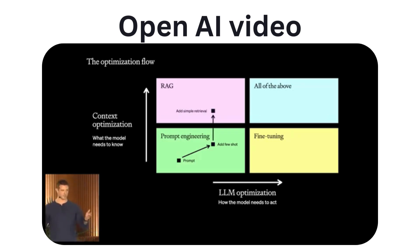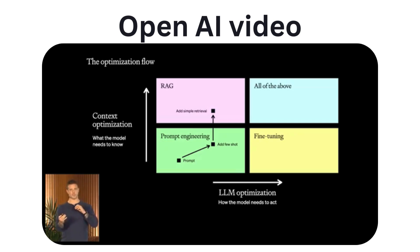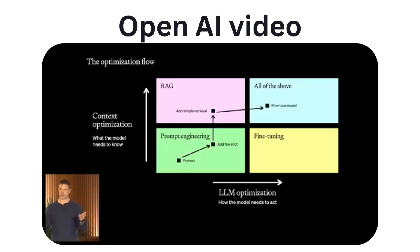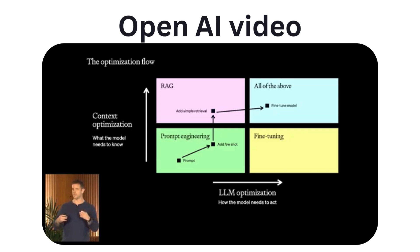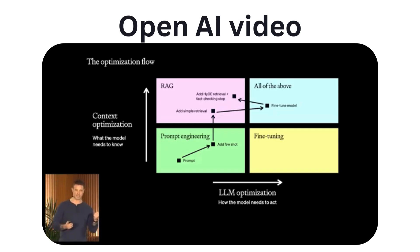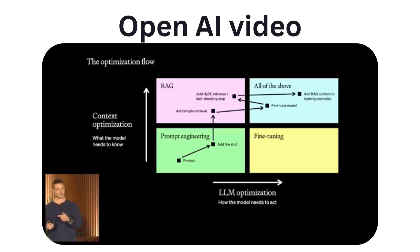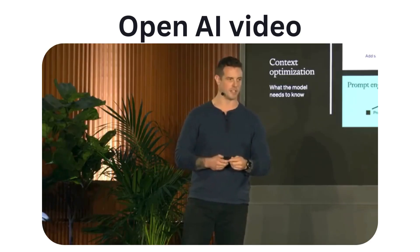That's usually where folks add retrieval augmented generation. Let's say the model now has context, but it's not producing the output in exactly the format or style you want every time — so you might then fine-tune the model. A classic next step is then to go back and optimize the RAG if the retrieval isn't quite as good as you want. Once you've optimized RAG again, you fine-tune your model again with the new examples introduced by your updated RAG pipeline.